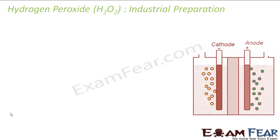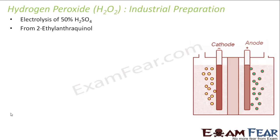Now let's talk about the industrial preparation of H₂O₂, since it is very widely used in industry. There are two industrial methods. The first is by the electrolysis of 50% H₂SO₄. The second is from 2-ethylanthracene. Let's start with the electrolysis of 50% dilute H₂SO₄.